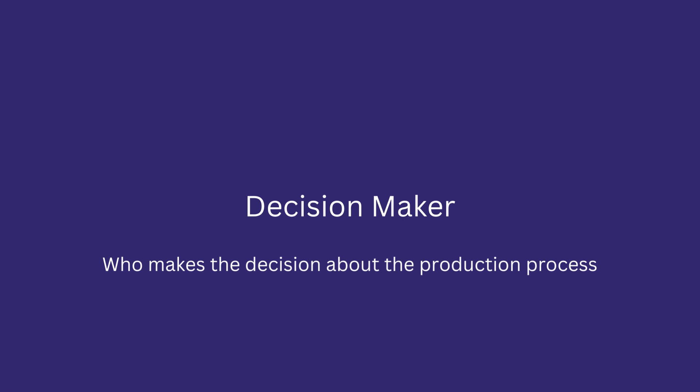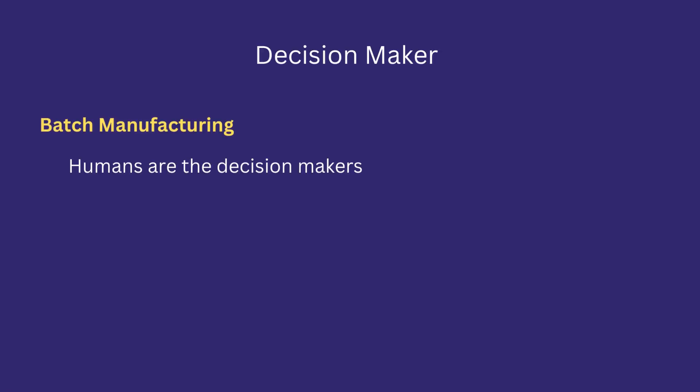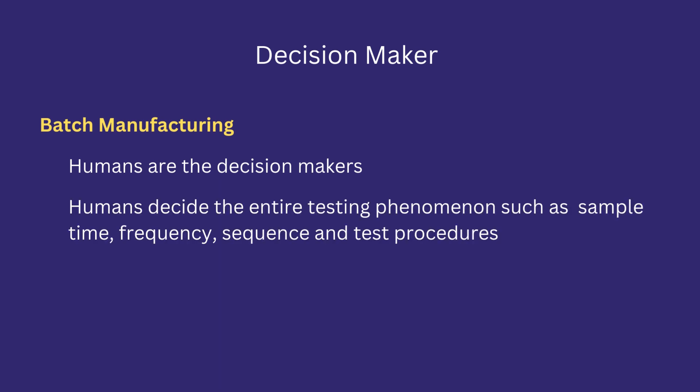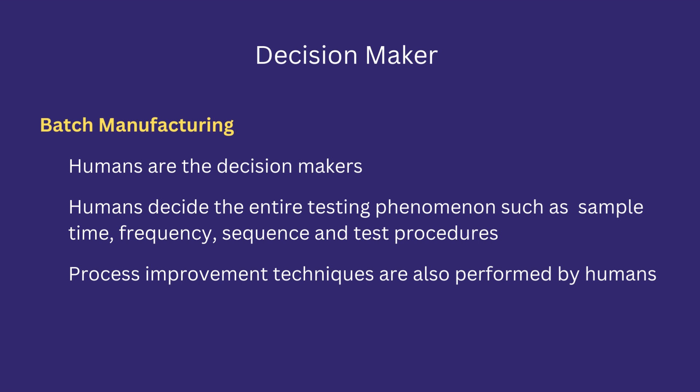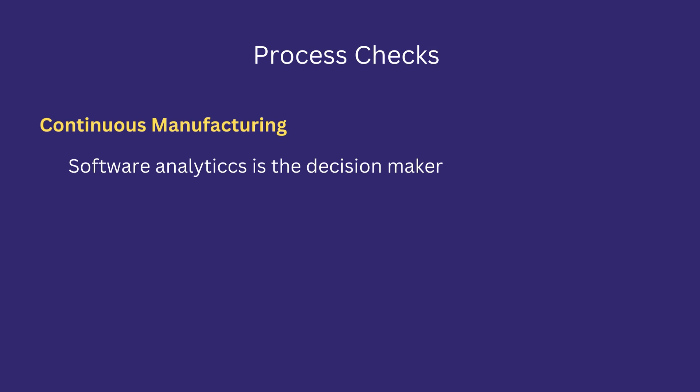Decision maker means who makes major decisions about the product or process. In batch manufacturing, humans perform the decision-making process. They analyze the output of instruments and decide the future line of action. Humans decide the entire testing phenomenon such as sampling time, frequency, sequence, and test procedures. There is no automatic mechanism to check the agreed phenomena. Process improvement techniques are also decided and performed by humans. For example, if there is a deviation reported in the output of a test, humans must interfere to check and adjust the particular variable.